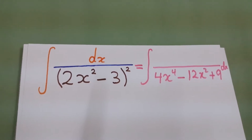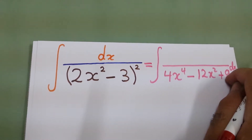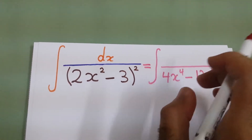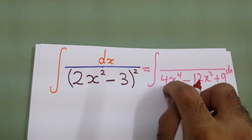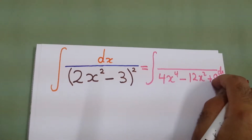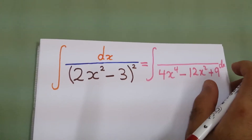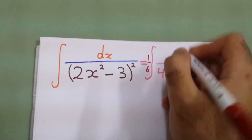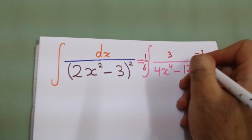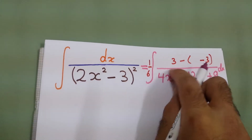First you should multiply by 2 times the square root of the constant. If you have this form of integral — 1 over a coefficient of x⁴, a coefficient of x², and a constant — then multiply by 2 times the square root of the constant. So we will multiply by 6 and divide by 6. This 6 we will write as 3 plus 3.